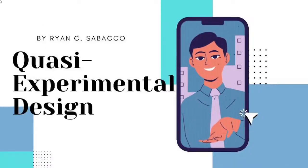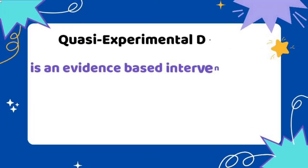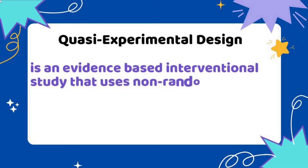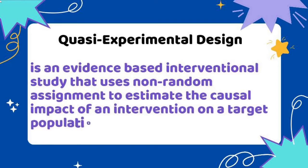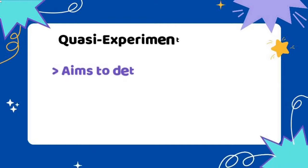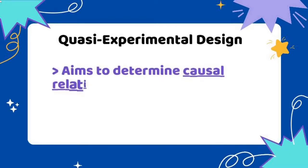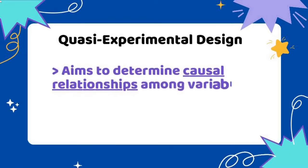Hey guys, I am Ryan and this time we'll talk about the quasi-experimental design. Quasi-experimental design is an evidence-based interventional study that uses non-random assignment to estimate the causal impact of an intervention on a target population. This kind of research design aims to determine causal relationships among variables.